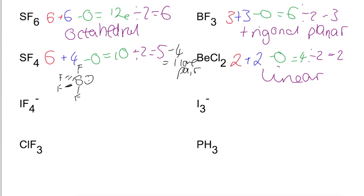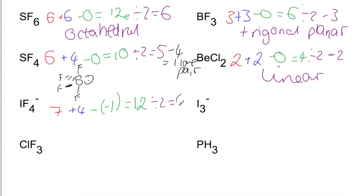Looking at the ion IF4-: iodine has seven electrons as the central atom. We add four fluorines and then do minus minus one for the negative charge, giving twelve electrons in total. Dividing by two gives six electron pairs, but with only four things attached we have two lone pairs. The six electron pairs arrange in an octahedral arrangement, but the two lone pairs try to get as far away from each other as possible, which means the rest of the ion is square planar.